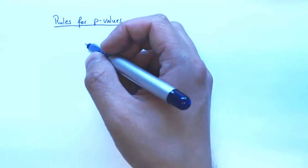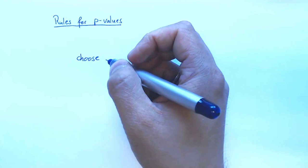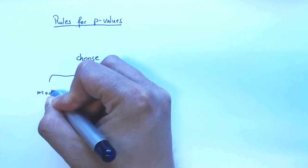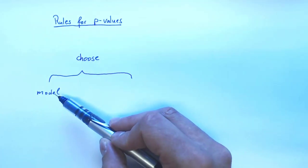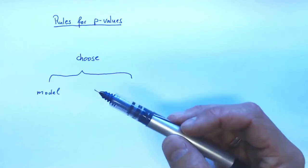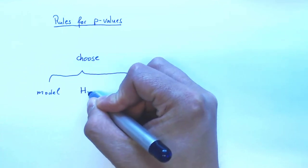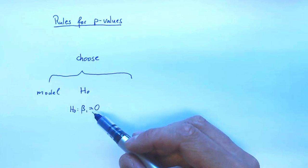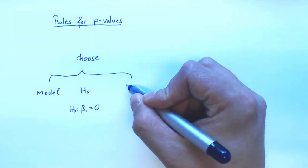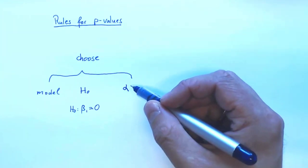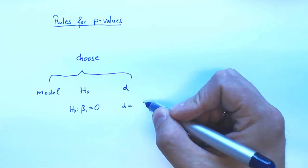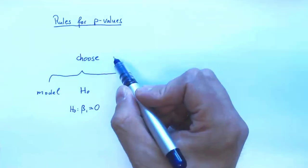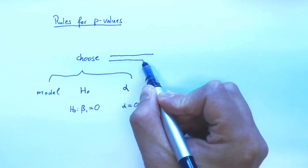Ideally, what you do is first choose several things. You choose a model — for example, an appropriate linear regression model that replicates in a reasonable way how the world around us behaves. Then you choose the null hypothesis — for example, that the effect of study time is zero, if you want to establish the significance of study time. And you choose a probability of type one error that you are happy to accept — for example, one percent. Then you draw a random sample.